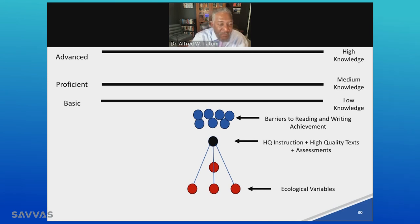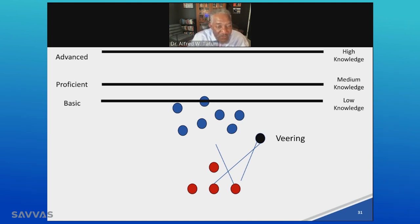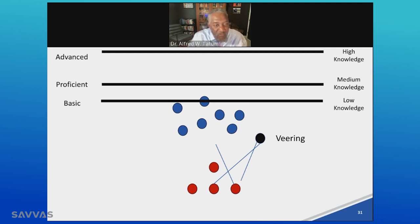With this simulated marble game, when I started hitting those barriers with the small marble, we have what I refer to as veering. There was some movement, but students were not moving fast enough and far enough, remaining at the bottom.